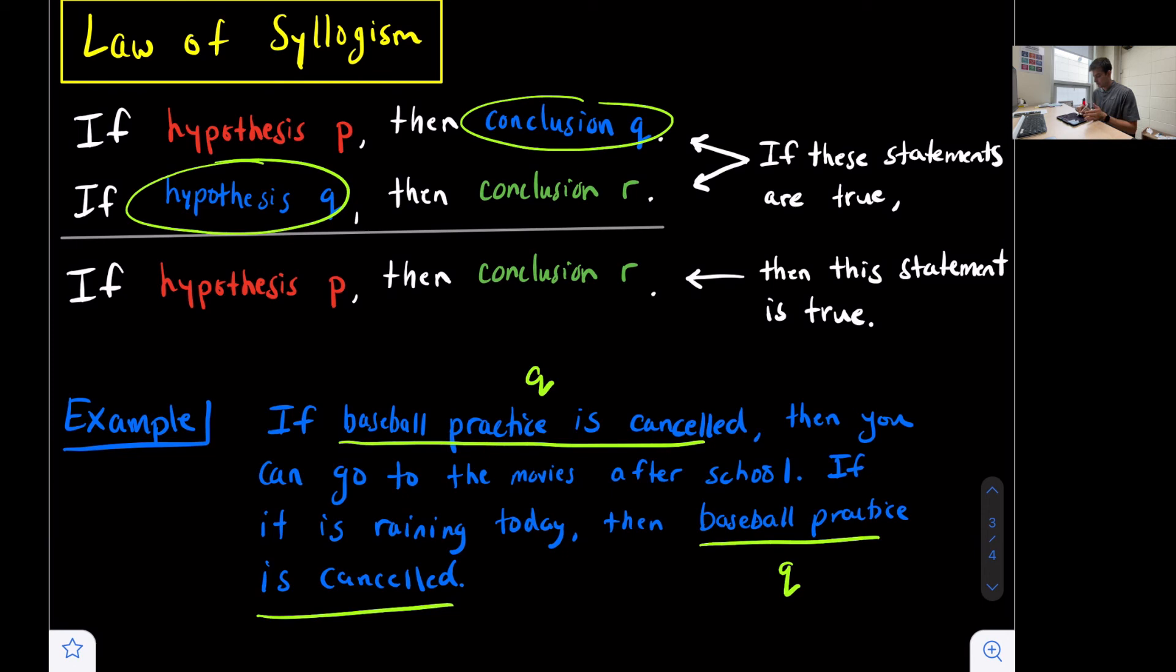So now we can identify R and P. So if Q, then R. So then you can go to the movies. So going to the movies must be R. And then since Q was our conclusion in the second statement, if it is raining today, that would represent P.